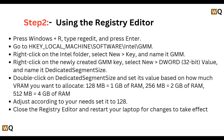Right-click on the newly created GMM key, select New DWORD (32-bit) Value, and name it DedicatedSegmentSize. Double-click on DedicatedSegmentSize and set its value based on how much VRAM you want: 128 MB equals 1 GB of RAM, 256 MB equals 2 GB, and 512 MB equals 4 GB. Adjust according to your needs — mostly set it to 128. Close the Registry Editor and restart your laptop for changes to take effect.